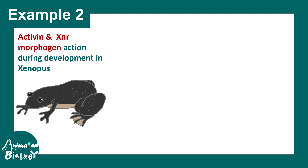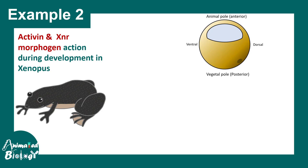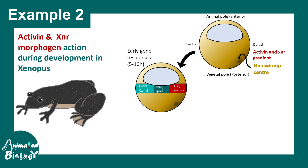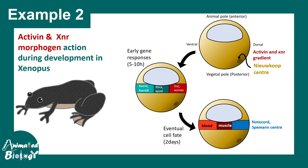Another example comes from Xenopus. In the Xenopus embryo, an Activin/XNR gradient leads to specification of specific structures along the animal-vegetal and dorsal-ventral poles. There is a signaling center called the Nieuwkoop center which secretes Activin/XNR. This morphogen shapes different gene expression in different regions — the dorsal-most region becomes notochord or the Spemann organizer, the lateral region becomes muscle cells, and the ventral-most region produces blood cells.